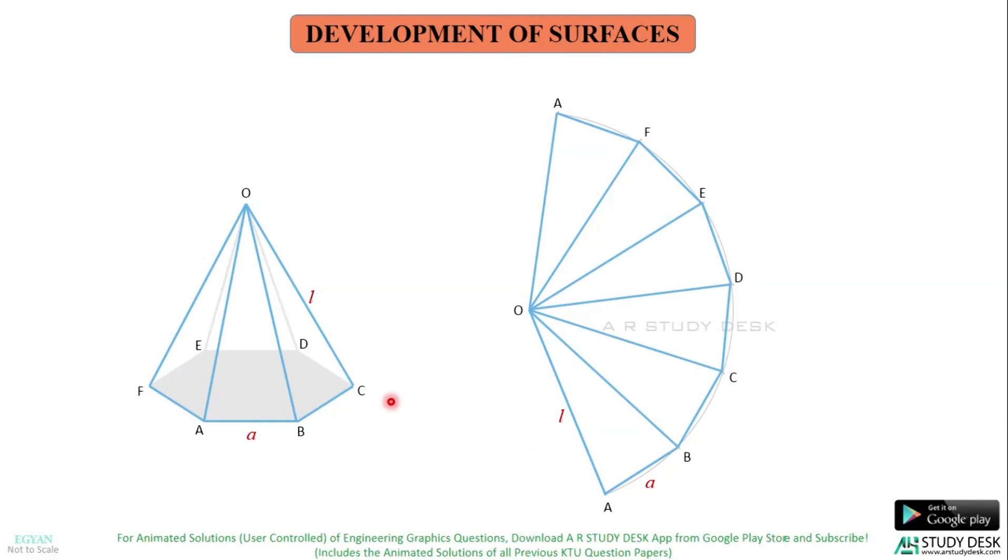If the complete development of this hexagonal pyramid is asked, you should draw this base which is a hexagon like this. So, as I have named the base in order, in the development also I can name it in order. So, this is D and this is E which means this will be C, this is B, this is A and this will be nothing but F. For my convenience, I have drawn it here. You can connect this hexagon at any of these base edges. And the most important point while developing a pyramid is that this length with which you draw this arc should be the true length of the slant edge.